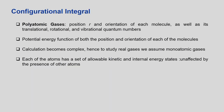To summarize: for polyatomic gases we need to consider both the position and orientation of each molecule, as well as its translational, rotational, and vibrational quantum numbers. If we want to derive the Virial equation of state for polyatomic gases, the potential energy becomes a function of both position and orientation of each molecule, making the calculation very complex. Hence to study real gases we will assume monoatomic gases.